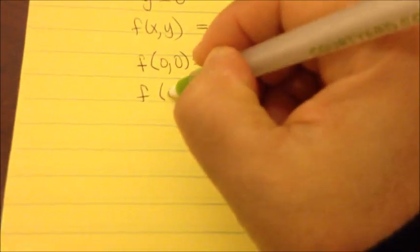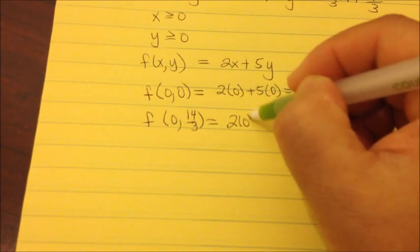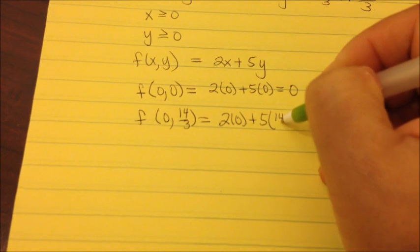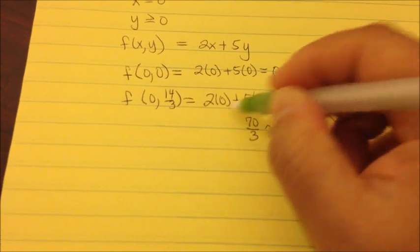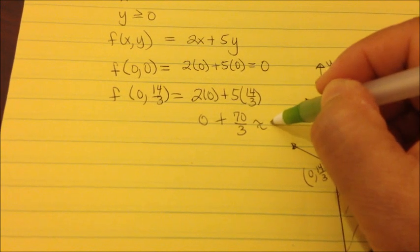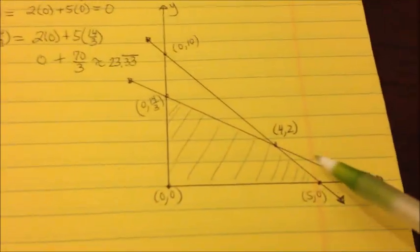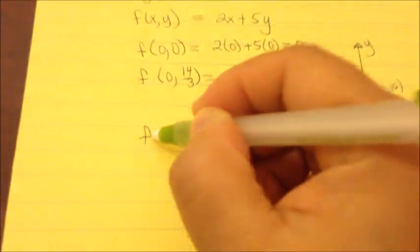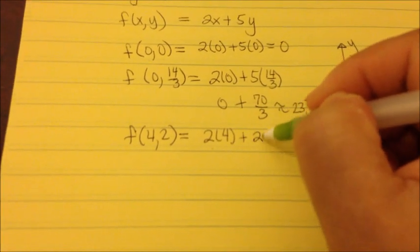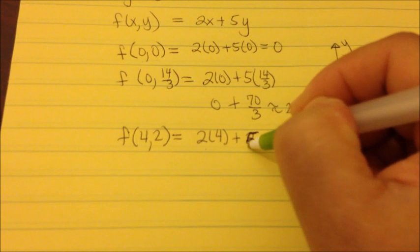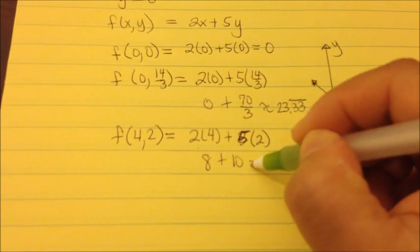Continuing with (0, 14/3): 5 times 14/3 gives 70/3, which is approximately 23.33. Next, for the point (4, 2): f(4, 2) = 2(4) + 5(2) = 8 + 10 = 18.